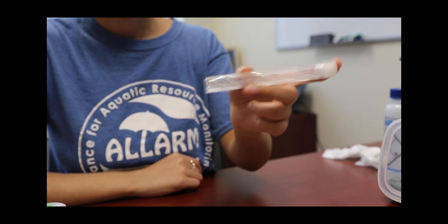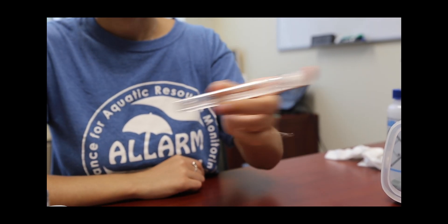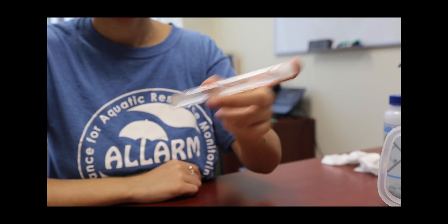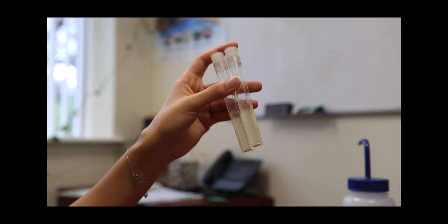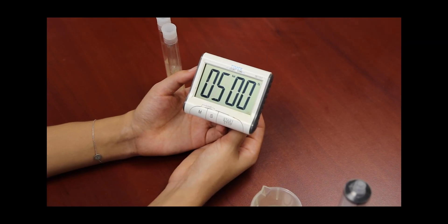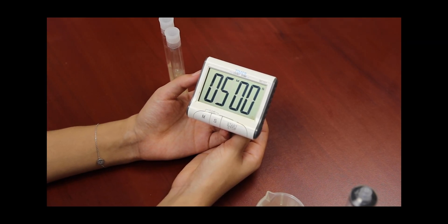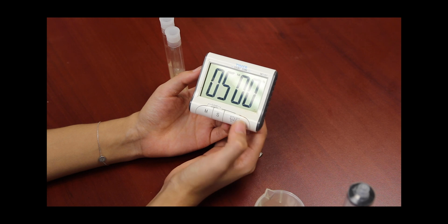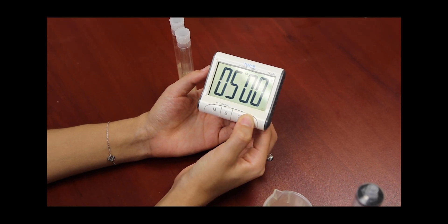You can also run your two replicates simultaneously. If you choose to do this, hold and shake both test tubes in the same hand for consistency. Once the two minutes are up, put the samples down and set the timer for 5 minutes and wait for the reaction to finish.